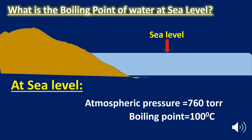What is the boiling point of water at sea level? The boiling point is directly proportional to the external pressure. At sea level, the atmospheric pressure is 760 torr, so the boiling point of water is 100 degrees Celsius.